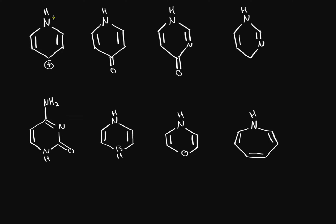Let's label all the lone pairs on all these nitrogens before we start. On this one we have one lone pair, one lone pair here, one lone pair here, another one there. Same thing with this one and this one. This one also has a lone pair, and so does this one and this one. All these have lone pairs. The boron does not have a lone pair. This nitrogen does, this nitrogen does. We can even label the lone pairs on these oxygens if you want to. So all the lone pairs have been labeled.